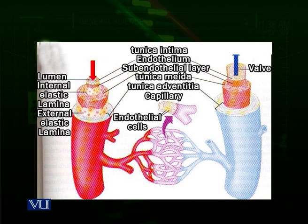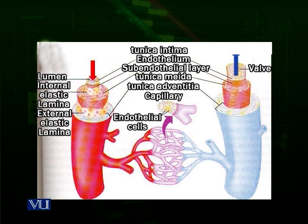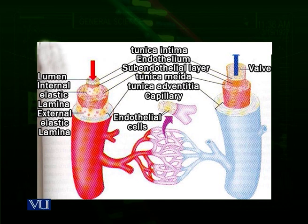Let us look at the diagram of arteries, veins, and capillaries. On the left side you can see an artery in red color, because arteries have oxygenated blood. Then you can see that the artery is divided into smaller arteries called arterioles. These arterioles are further divided to make a network of very small vessels — these are the capillaries. This is the level where exchange actually occurs between the tissues and these capillaries, because blood cells pass one by one through the lumen of these capillaries, so that exchange of material can easily take place.